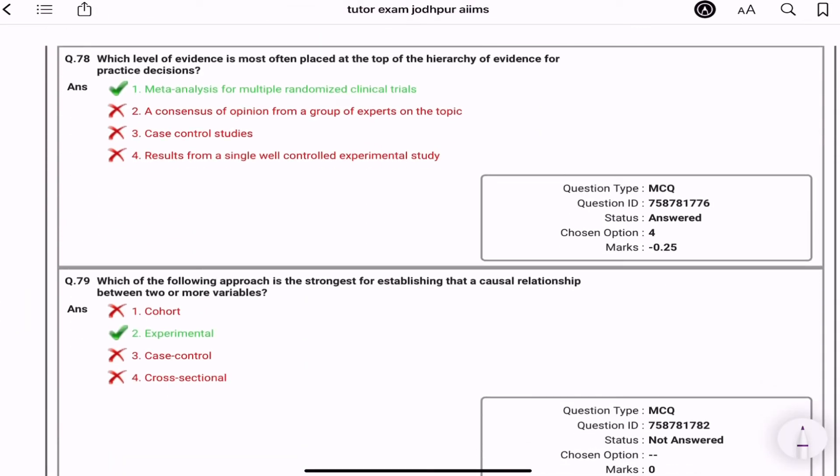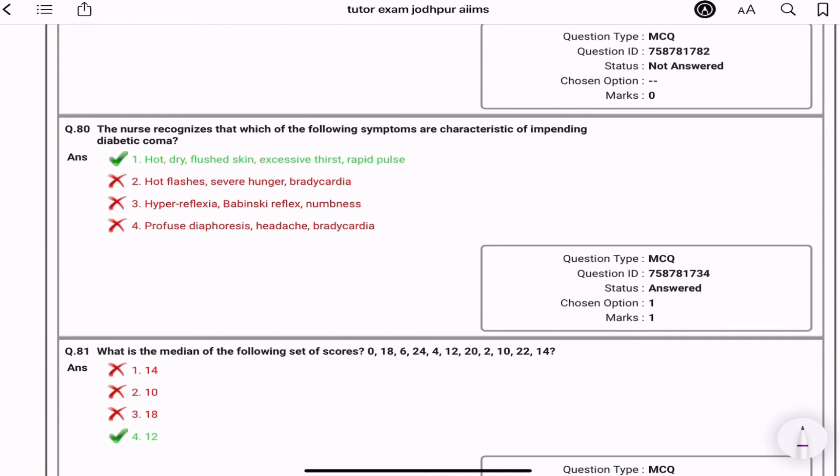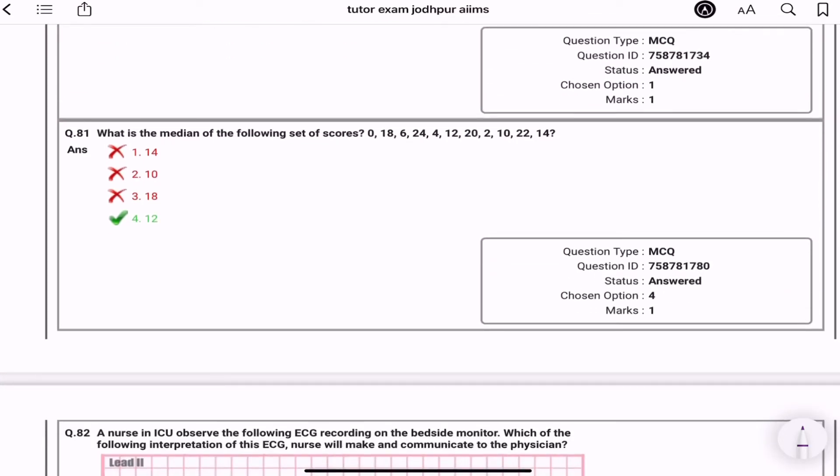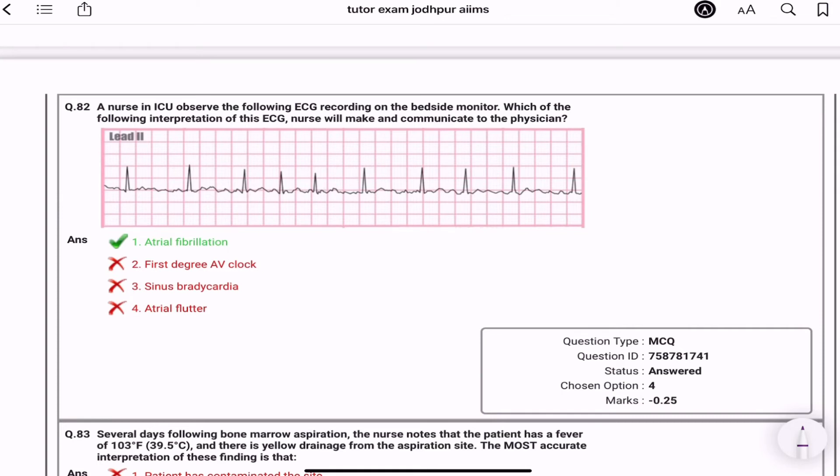Which level of evidence is most often placed at the top of hierarchy evidence for the practice decision? Meta-analysis for multiple randomized clinical trials. Which of the following approach is the strongest for establishing that causal relationship between two or more variables? Experimental. The nurse recognizes that which of the following symptoms are characteristics of impending diabetic coma? Patient ko impending diabetic coma hai, consistent honge hot dry flushed skin, excessive thirst, and rapid pulse. Which is the median? In se calculate karna ke median kaunsa hai. Aapne kya karna hai? Beech wala digit aapne uthana na, that is median.